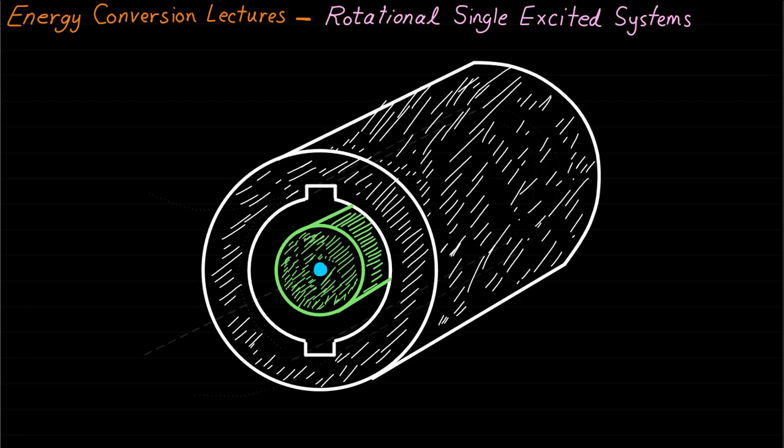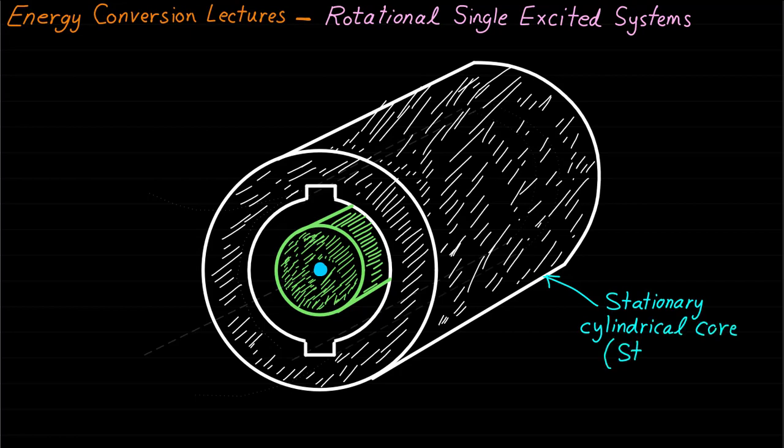Assume we have the following single excited rotational system and let's see if this system or machine is able to develop torque or movement. As you can see, this system or machine consists of a fixed cylindrical core called stator.